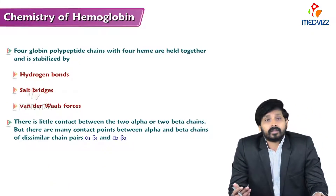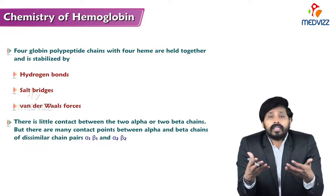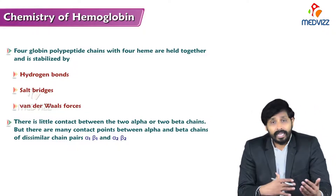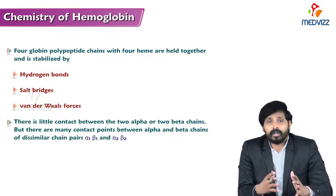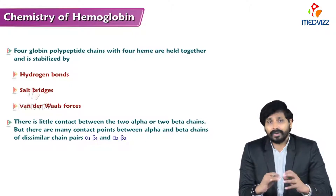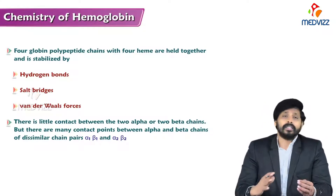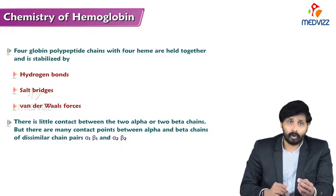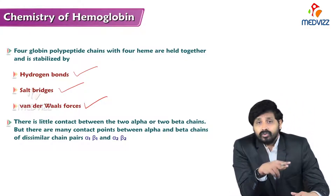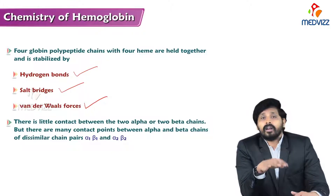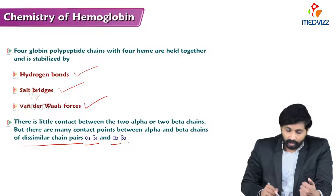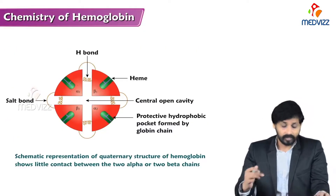The four chains are polypeptide chains since they are made up of amino acids. The attachment of heme to the globin chain is stabilized by various non-covalent bonds such as hydrogen bonds, salt bridges, and van der Waals forces. There is little contact between the two alpha and two beta chains by salt bridges, but there are many contact points between alpha and beta chains in dissimilar chain pairs like alpha-1 beta-1 and alpha-2 beta-2.